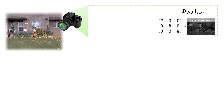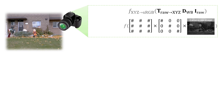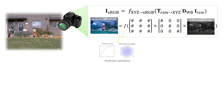White balance is applied early to the camera's raw RGB image. This is followed by a transform to convert the raw RGB color space into a device-independent color space. Afterwards, camera-specific color manipulation in the form of tone curves and lookup tables are applied to further modify the colors. The final output is saved in a standard RGB color space.